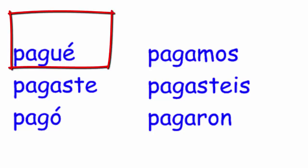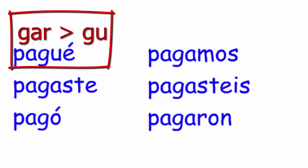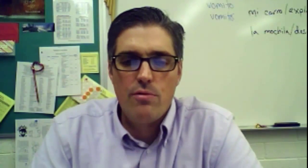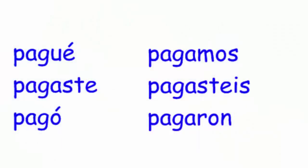For gar verbs like pagar or entregar — pagar is totally normal in everything except the yo form. If we don't add that U after the G, it takes on a sound like 'ge' in 'porque.' We don't want to say 'paje,' we want to say 'pague' — closing the throat, what we call occlusive. So: pague, pagaste, pagó. Yo pagué diez dólares — I paid. The G changes to GU.